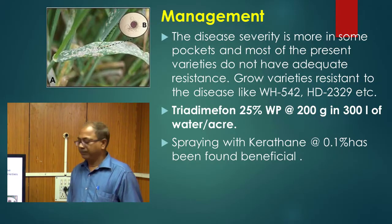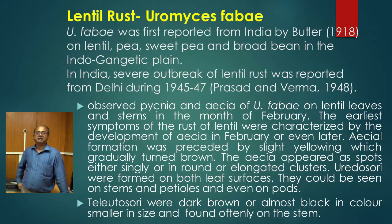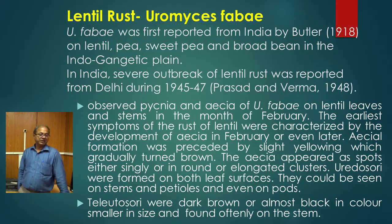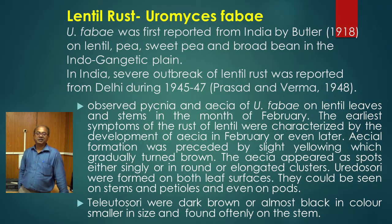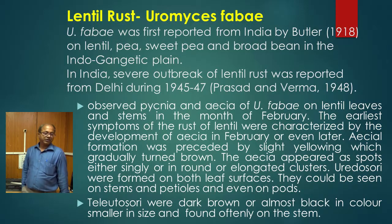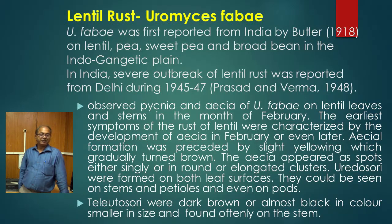In lentil we will discuss two diseases: rust of lentil and wilt of lentil. Rust of lentil is caused by Uromyces fabae. This disease was first reported by Butler in 1918 from India on lentil, pea, sweet pea, and broadbean from the Indo-Gangetic Plains. A severe outbreak of lentil rust was reported from Delhi during 1945 to 1947 by Prasad and Burma.